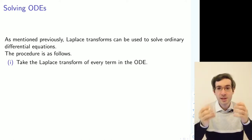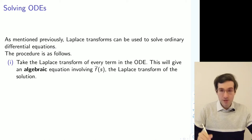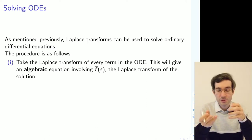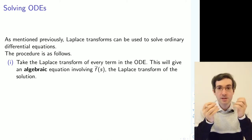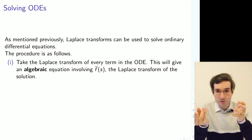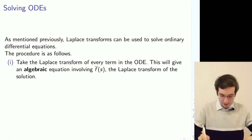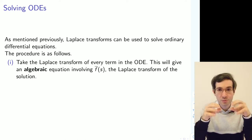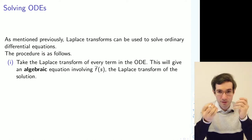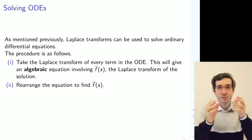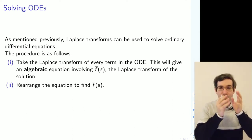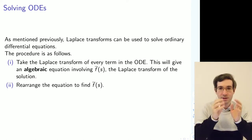Step 1 is to take the Laplace transform of the left-hand side and right-hand side. That will convert your equation from a differential equation to an algebraic equation. The reason is that derivatives get converted into Laplace transforms multiplied by s or s-squared, while integrals are divided by s. The resulting algebraic equation will depend on the unknown function — let's call it f-bar of s. Step 2 is to rearrange this equation so that you can express f-bar explicitly as a function of s.